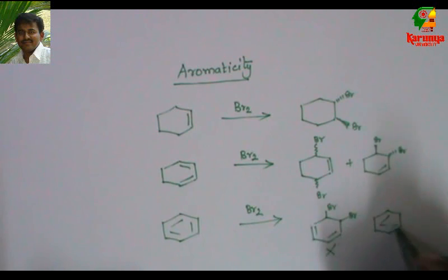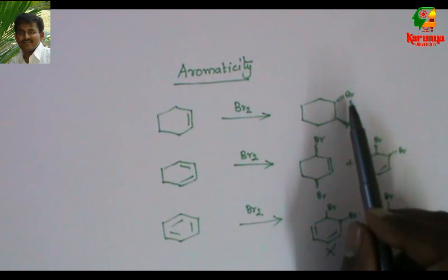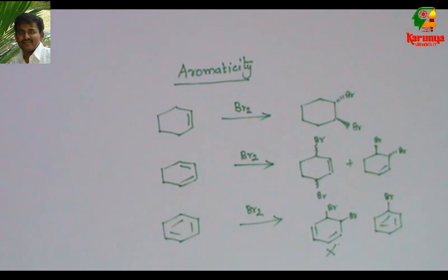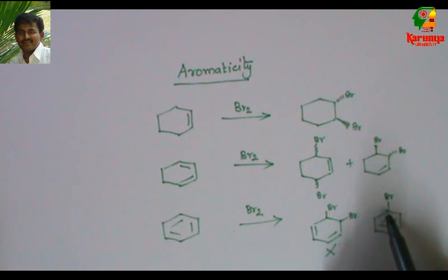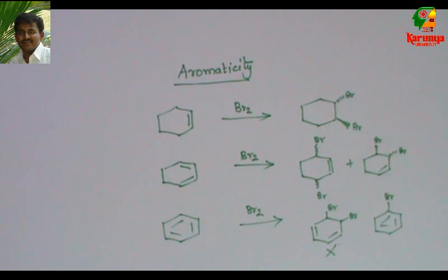But this dibromide product will not be formed. Instead, I get bromobenzene. In the first two examples, two bromine atoms are introduced into the molecule. But in the case of benzene, we get only one bromine atom. What is the reason? There is some property in benzene which doesn't prefer the regular reaction pathway. What is that property?